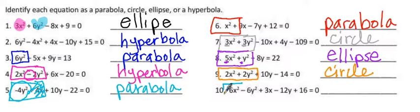And our last one, number 10, your squared variables are being subtracted. Anytime we have a subtraction sign, it has to be a hyperbola.